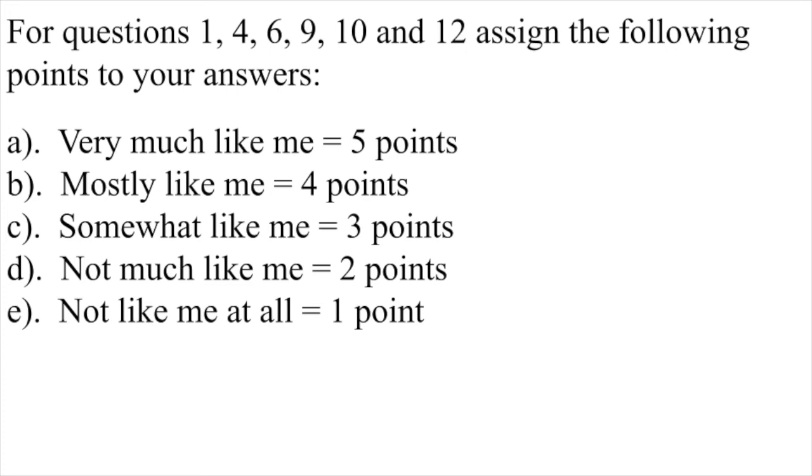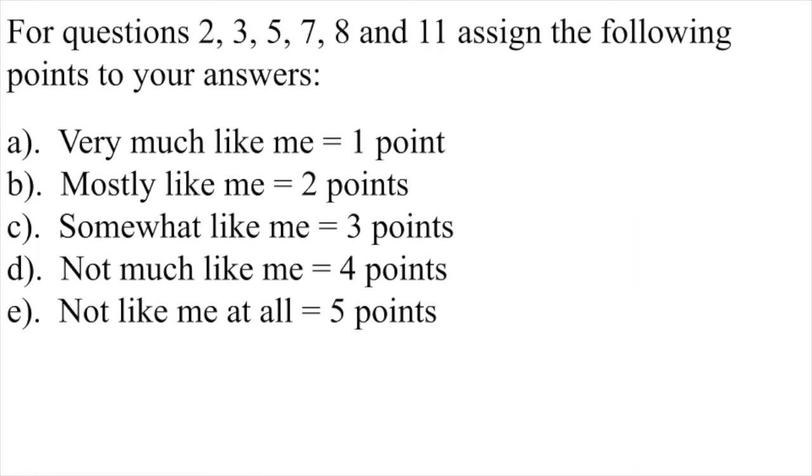A. Very much like me equals five points. B. Mostly like me equals four points. C. Somewhat like me equals three points. D. Not much like me equals two points. E. Not like me at all equals one point.